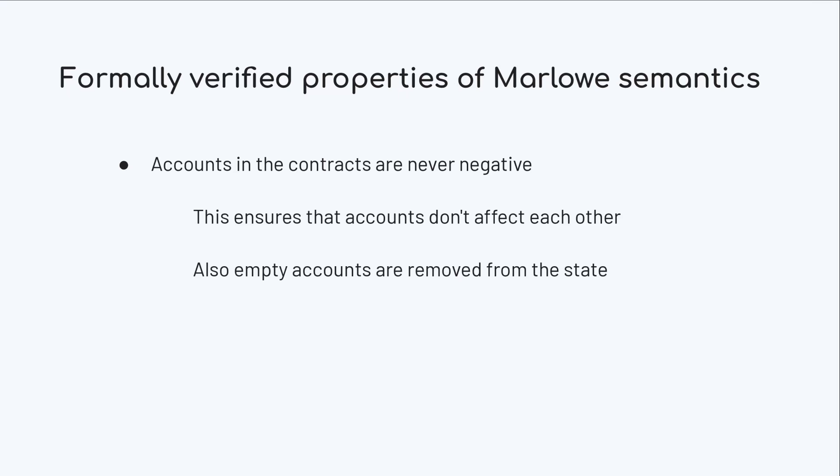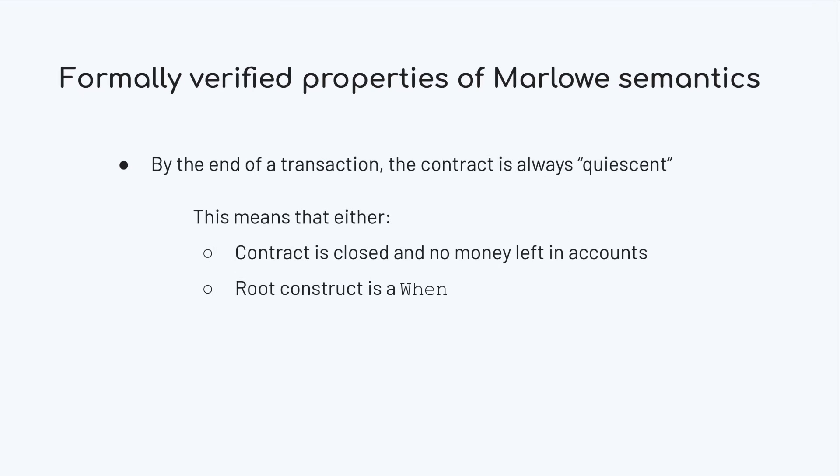Another optimization is that empty accounts are removed from the state, which provides a smaller state to keep on-chain. A more interesting property is that after a transaction, Marlowe remains in a state called quiescent — meaning the contract is either closed with no money left in the accounts, or the root construct of the contract is a when.